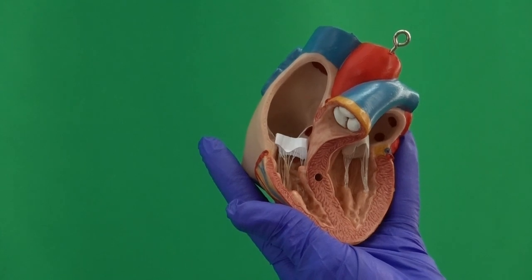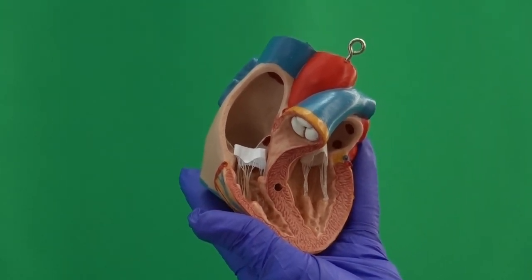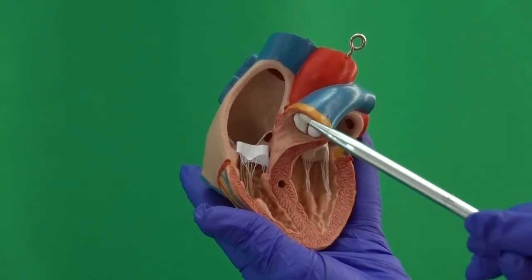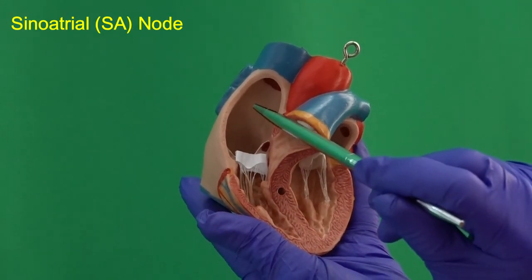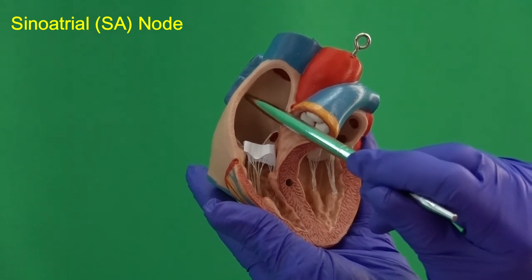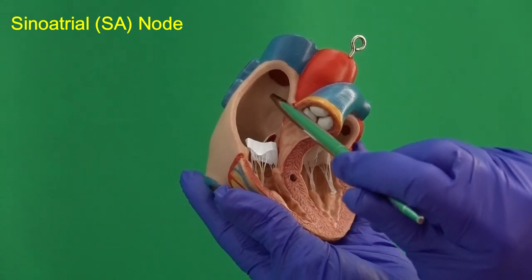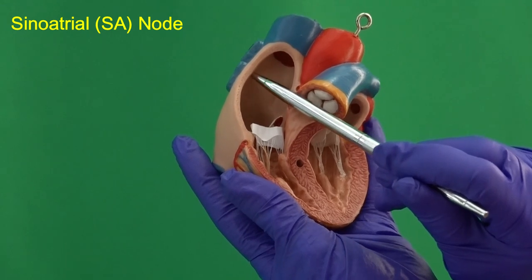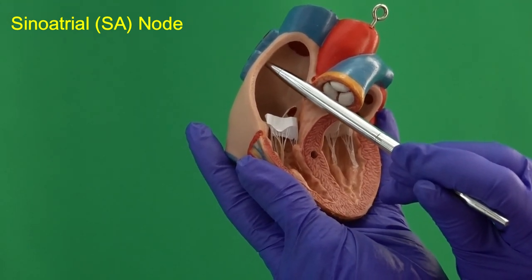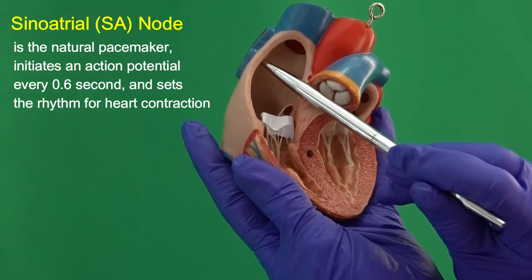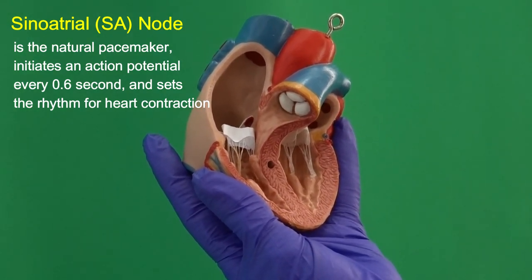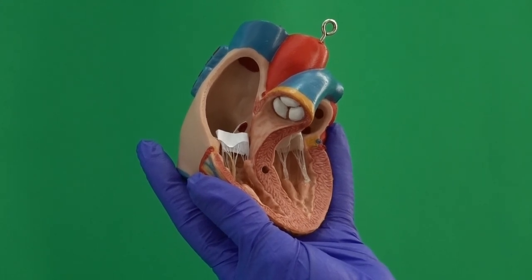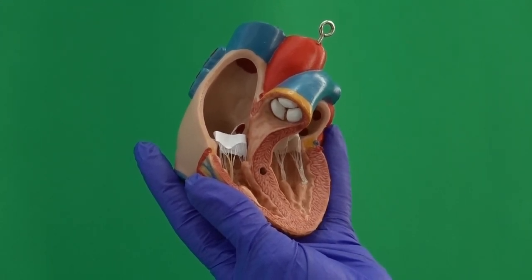Of all the auto-rhythmic fibers, the one that generates the most electrical impulses per minute is the sinoatrial node. We locate the sinoatrial node in the right atrium, exactly below and lateral to the opening of the superior vena cava, in the lateral wall of the right atrium. It generates an action potential every 0.6 seconds, which amounts to 100 electrical impulses per minute.